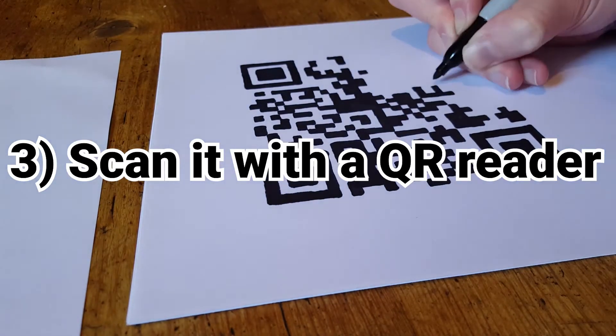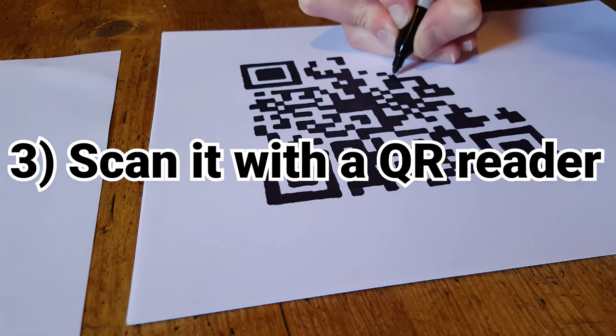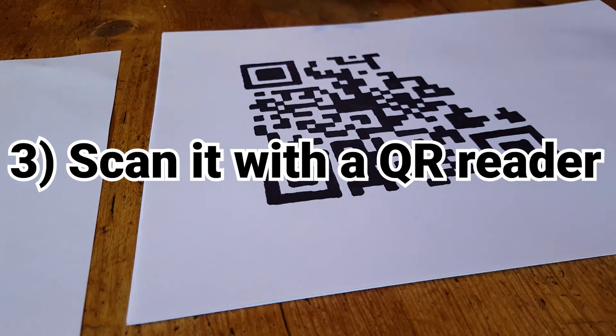3. Scan it with a QR reader to find out if you are A. Probably human, or B. Probably not human.